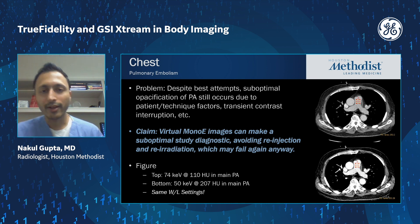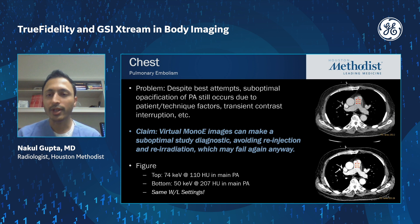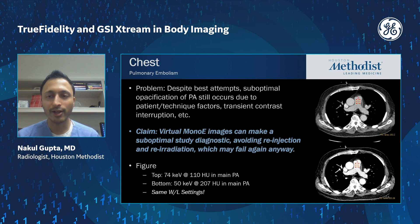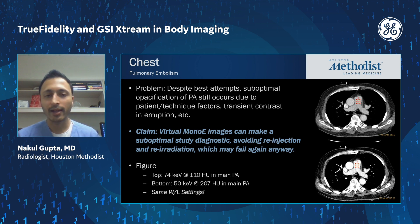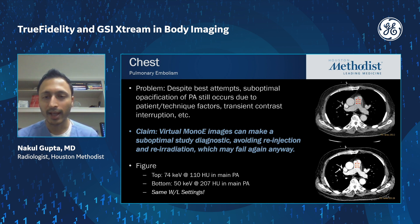Chest imaging is another area where we use GSI or dual energy, more for the virtual mono-energetic imaging than the iodine maps. Occasionally, despite your best efforts, you'll get a suboptimal bolus in the pulmonary artery. Here's an example where the 120 kVp-like image shows only 110 Hounsfield units in the pulmonary artery — normally requiring re-injection and re-scanning of the patient. But by lowering the keV to 50, we get 207 Hounsfield units and salvage an otherwise non-diagnostic exam.